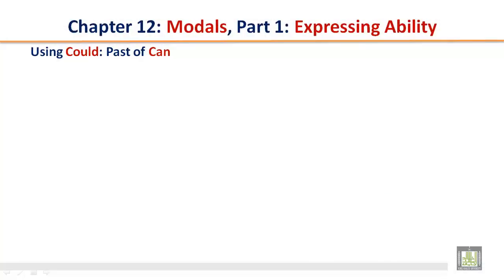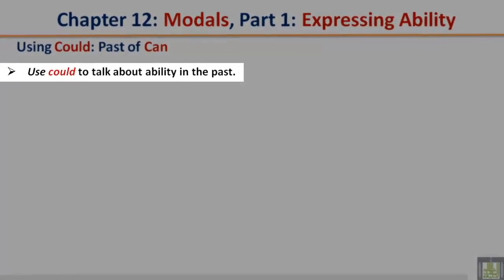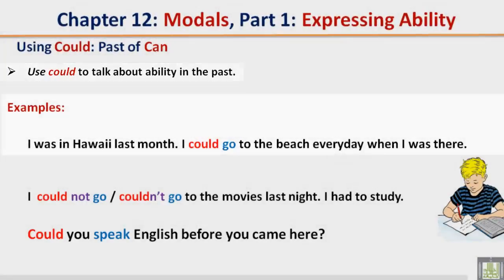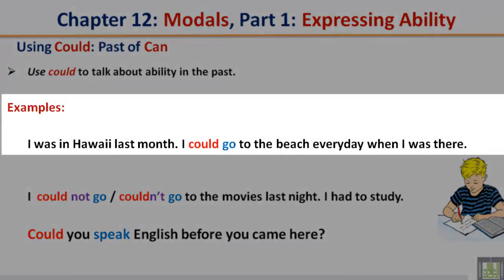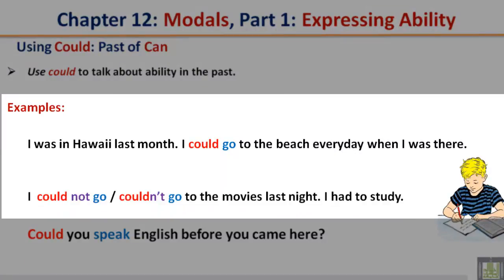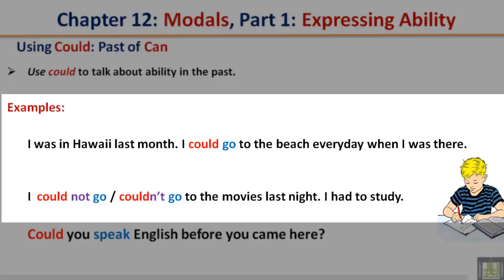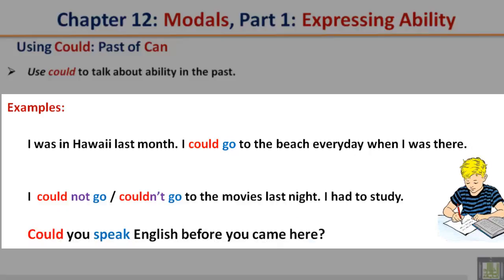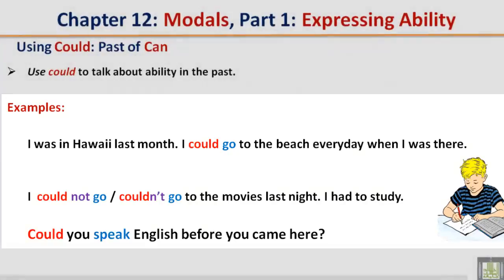Using could — the past of can. Use could to talk about ability in the past. Example: I was in Hawaii last month. I could go to the beach every day when I was there. I could not go, or couldn't go, to the movies last night — I had to study. Could you speak English before you came here?